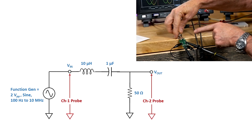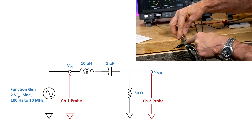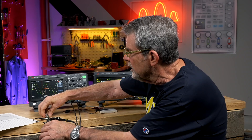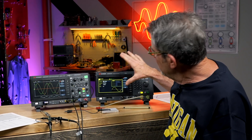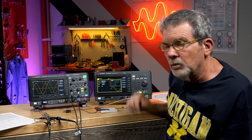This is my bandpass filter. I've got channel one connected to Vin, and channel two connected to Vout across the 50-ohm resistor. My generator is already set up to generate a 100 Hz sine wave, one volt peak-to-peak. We're going to take measurements all the way up to 10 megahertz — 100 Hz, 200 Hz, 500 Hz — stepping our way up, taking about 15 or 16 measurements.